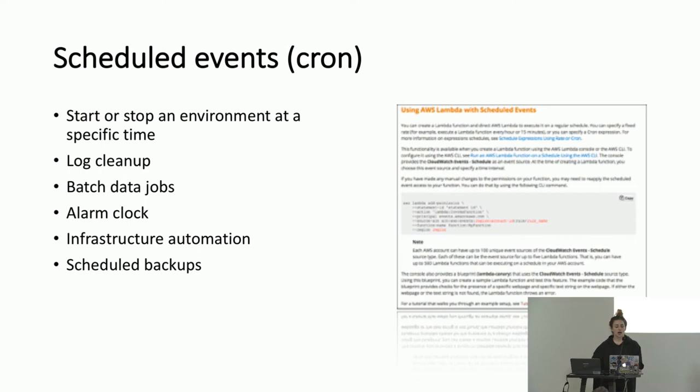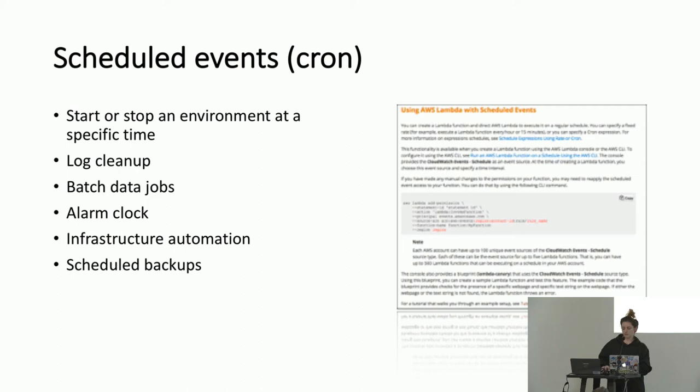To do it in Lambda: you can do scheduled events — start or stop an environment at a specific time, clean up logs, run batch data jobs, kick off a job in response to something else, alarm clock, infrastructure automation, spin something up when something else needs to start, schedule your backups. Tons of smaller jobs you used to schedule yourself, you can now use Lambda to handle so you don't have to SSH and manage them.